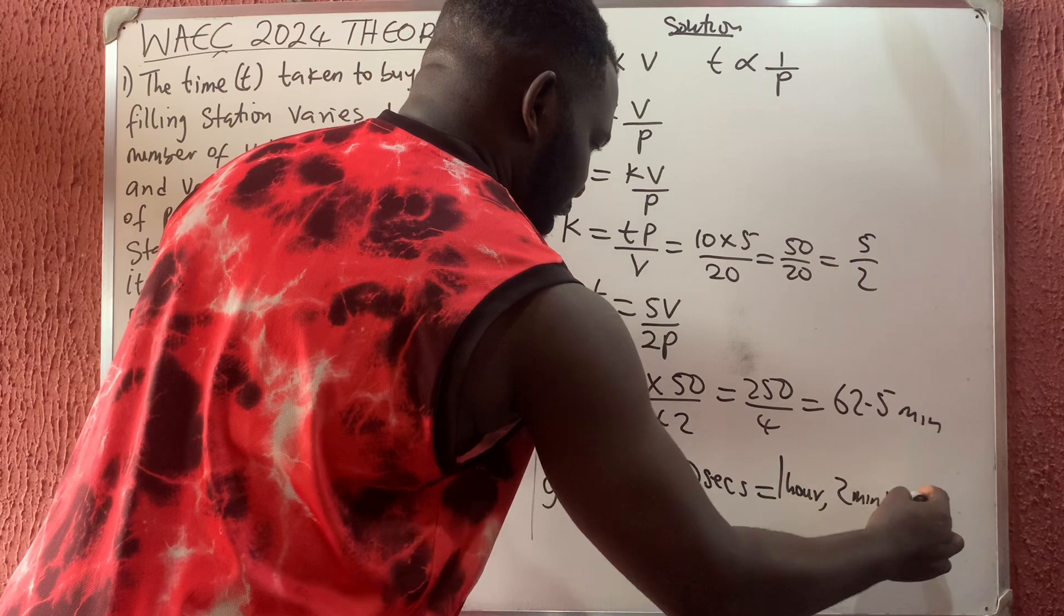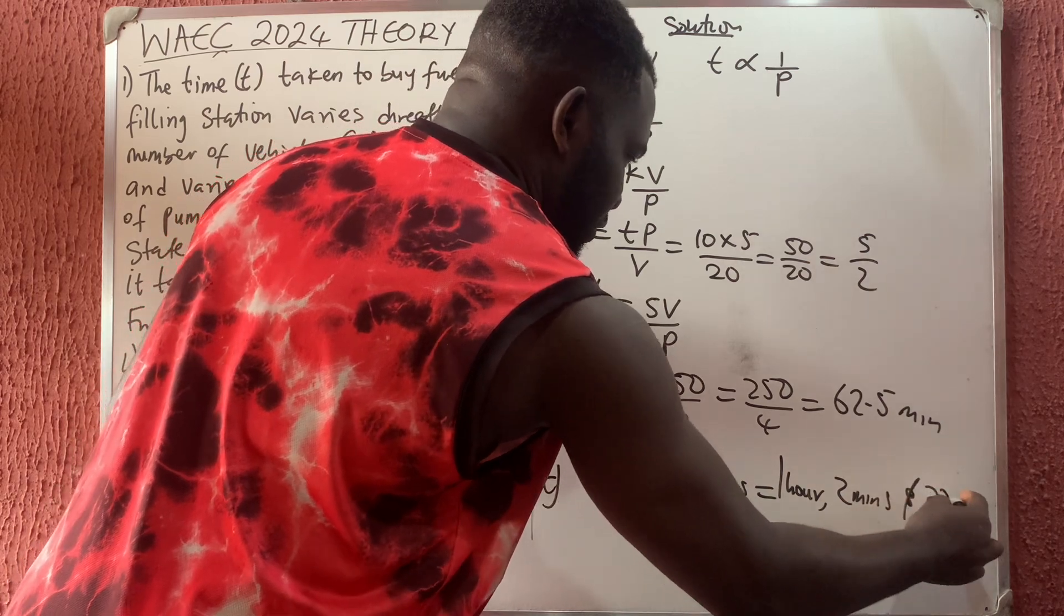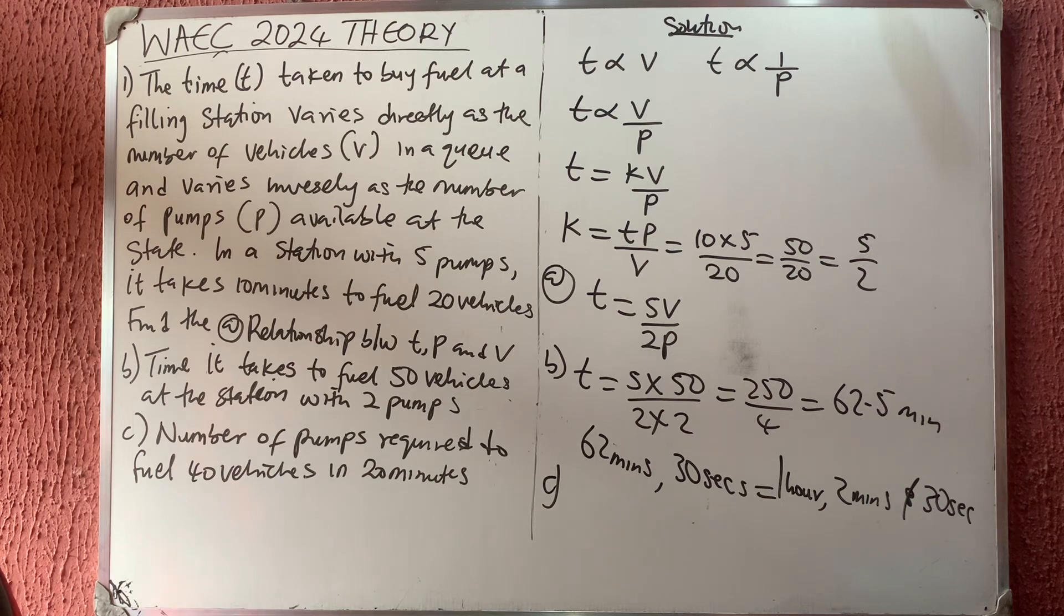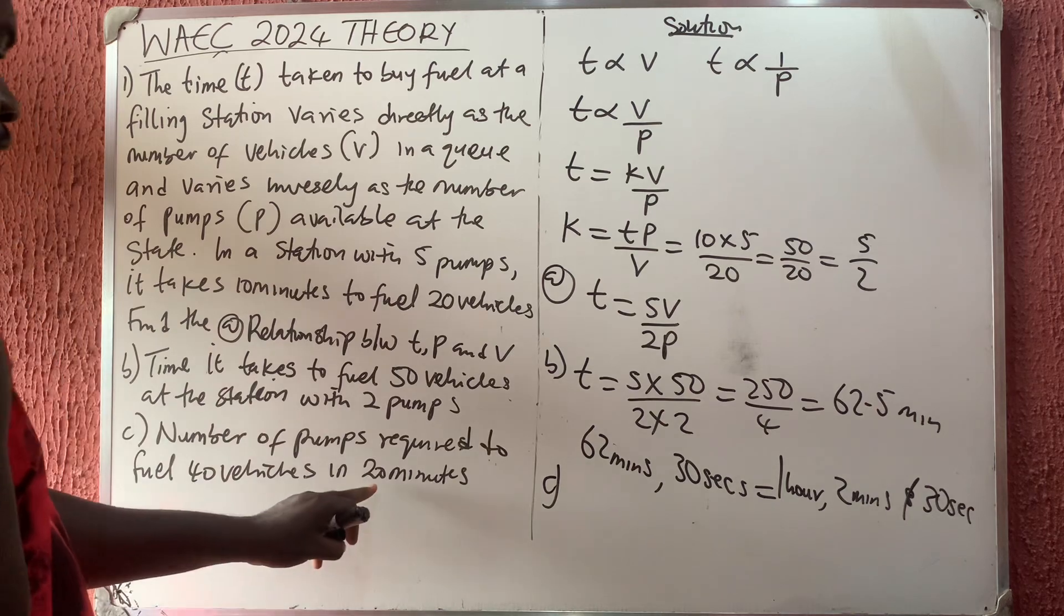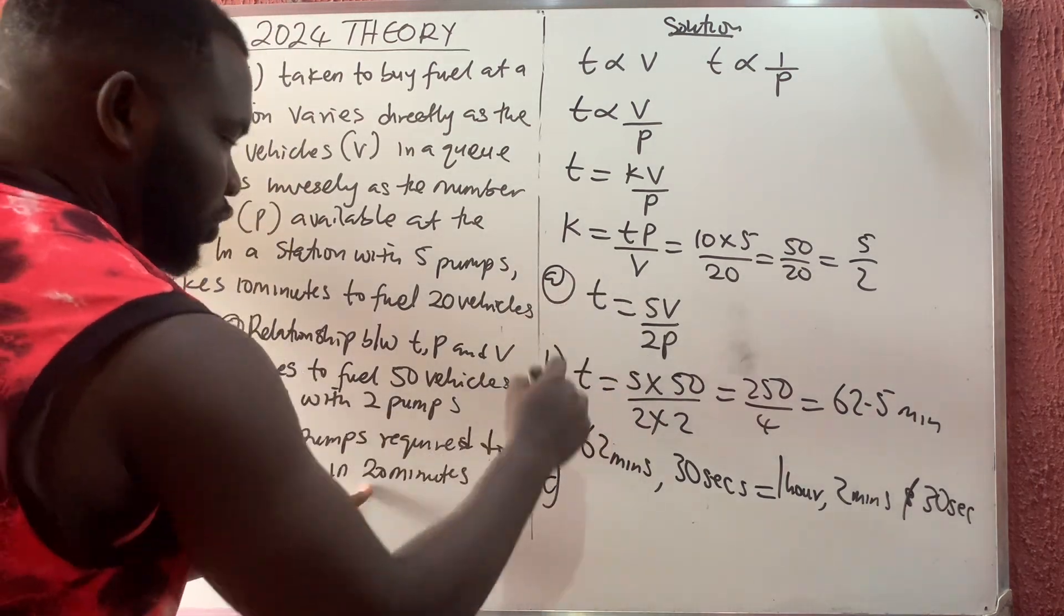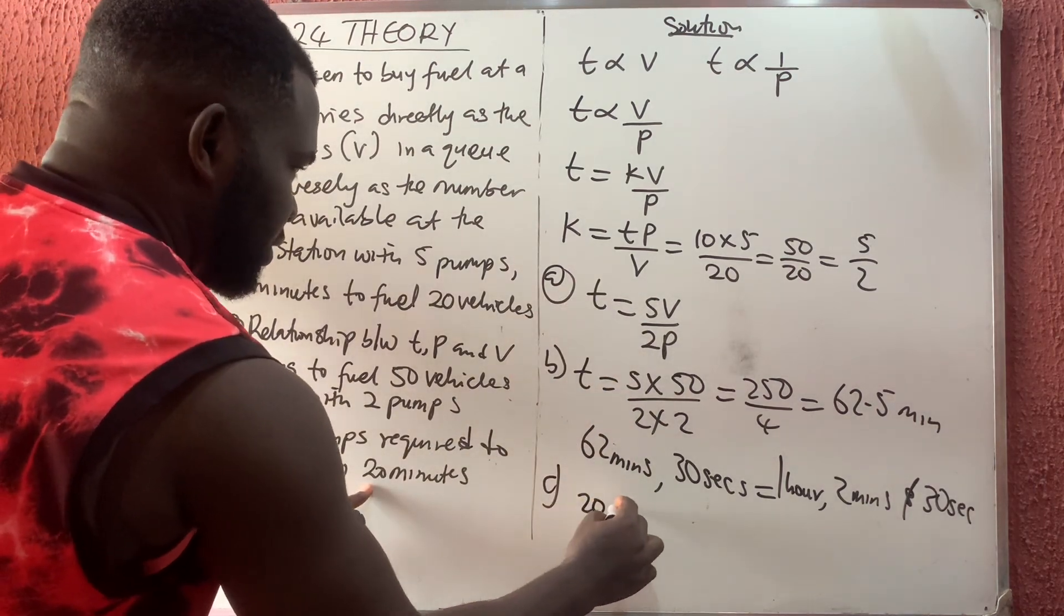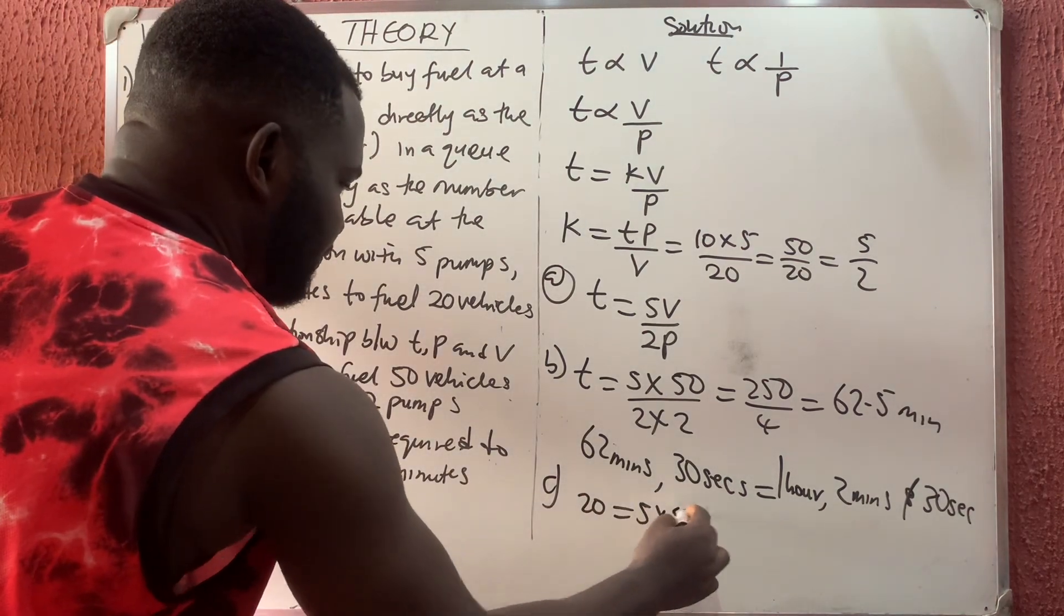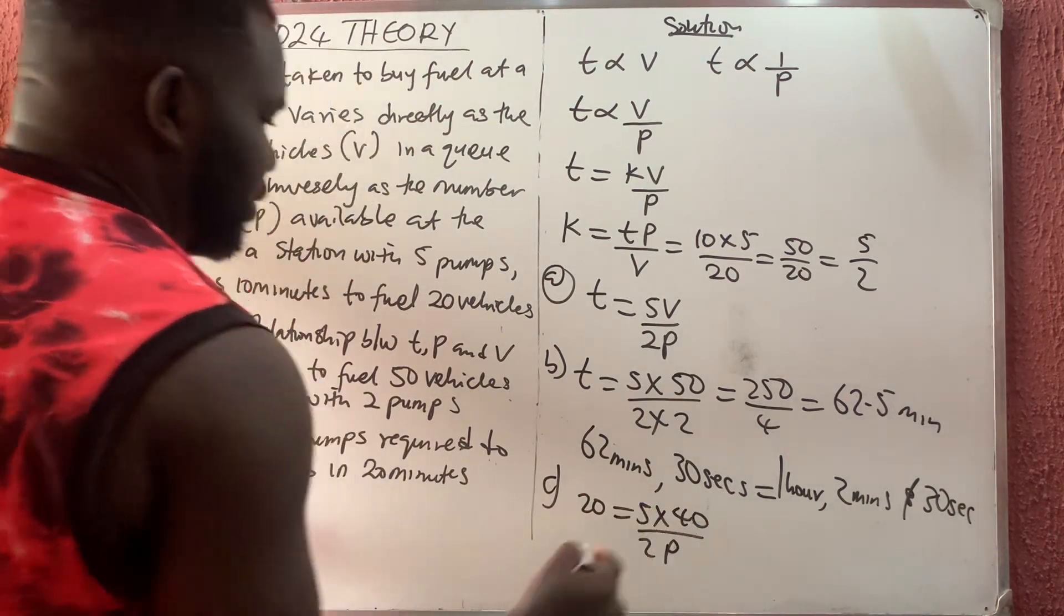For part c, they say the number of pumps required to fuel 20 vehicles. We're looking for pumps. Using the same relation, the time they gave us here is 20 equals 5 times the number of vehicles, which is 40, divided by 2p.